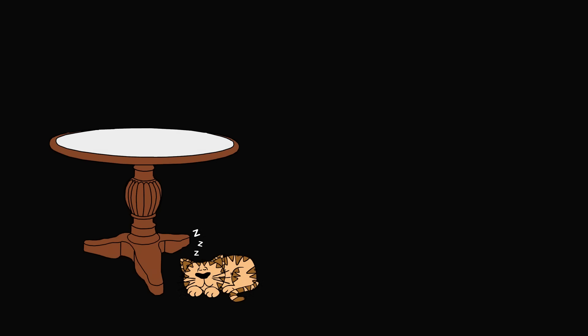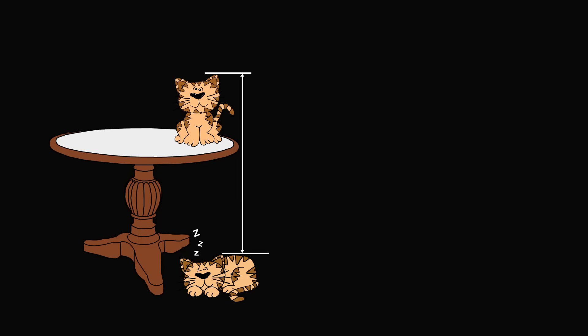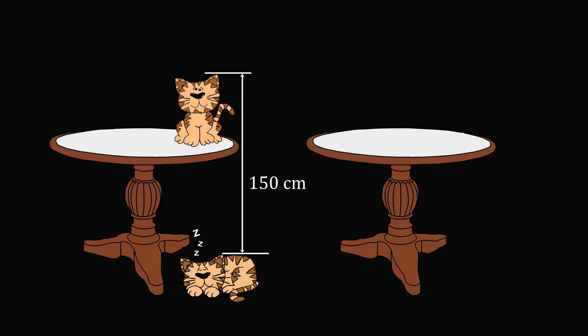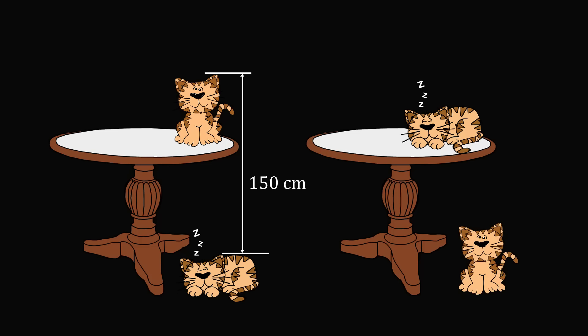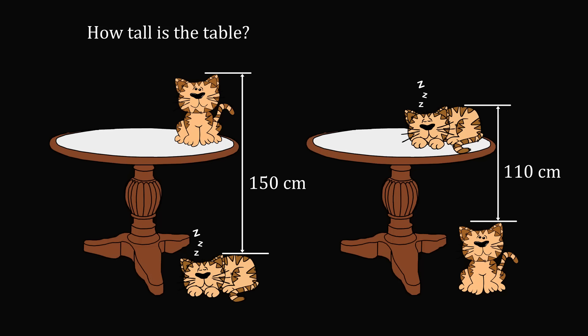So what was the question? We have a table, and at the bottom of the table we have a sleeping cat. On the table we have a sitting cat. The distance between the top of the sleeping cat and the top of the sitting cat is given as 150 centimeters. We also have another diagram with an identical table, but this time the two positions of the cats are reversed. The sitting cat is at the bottom and the sleeping cat is on top of the table, with the distance between their tops given as 110 centimeters. The question is: how tall is the table?